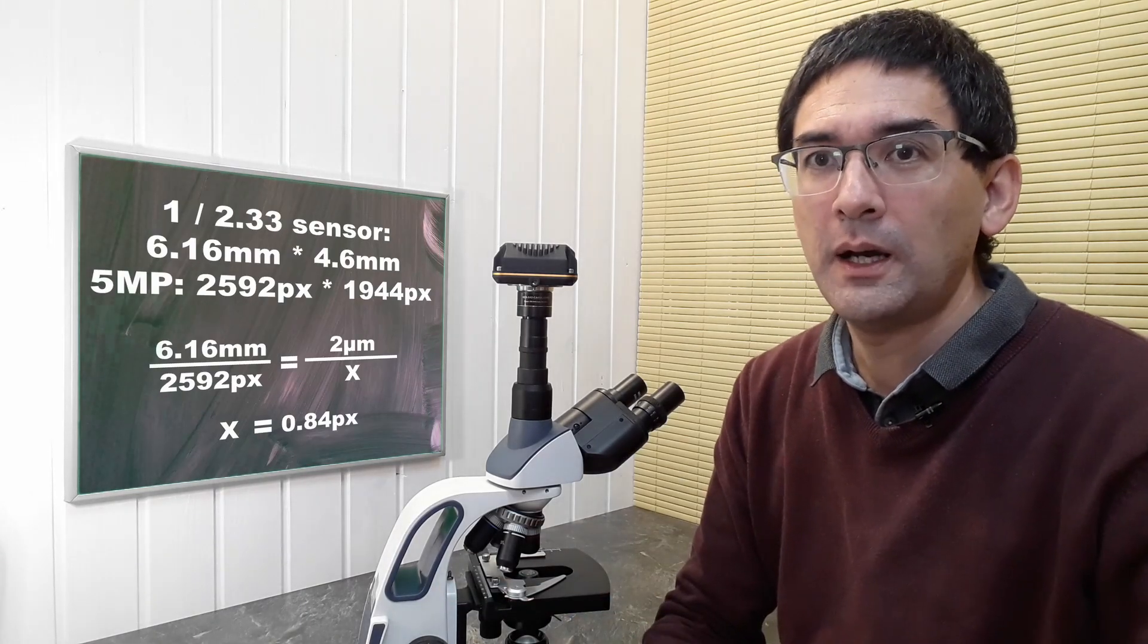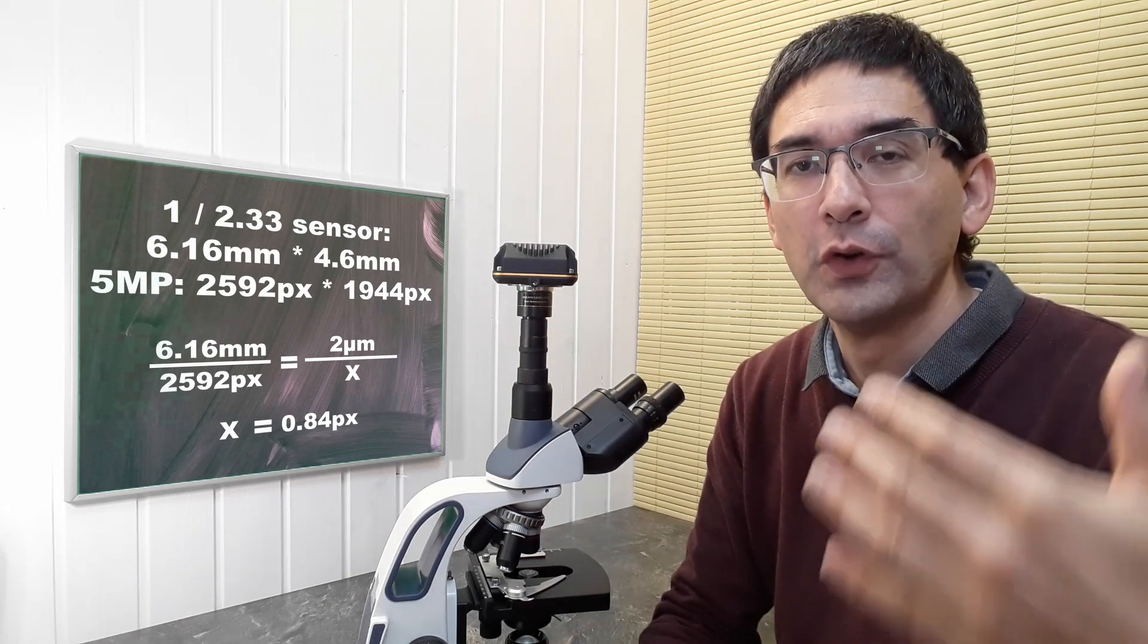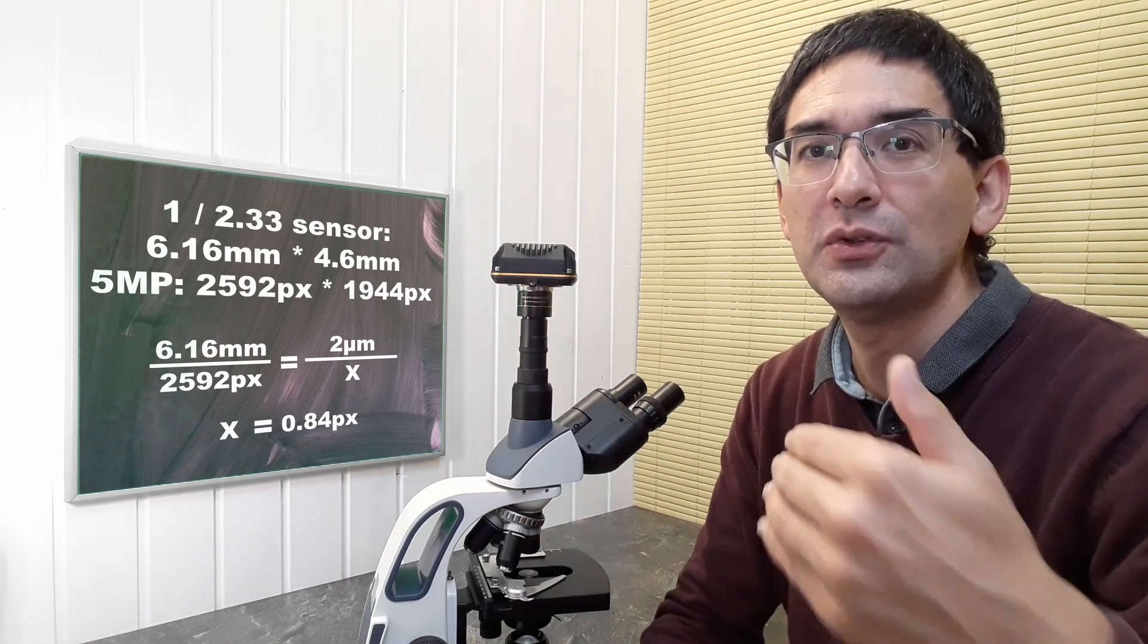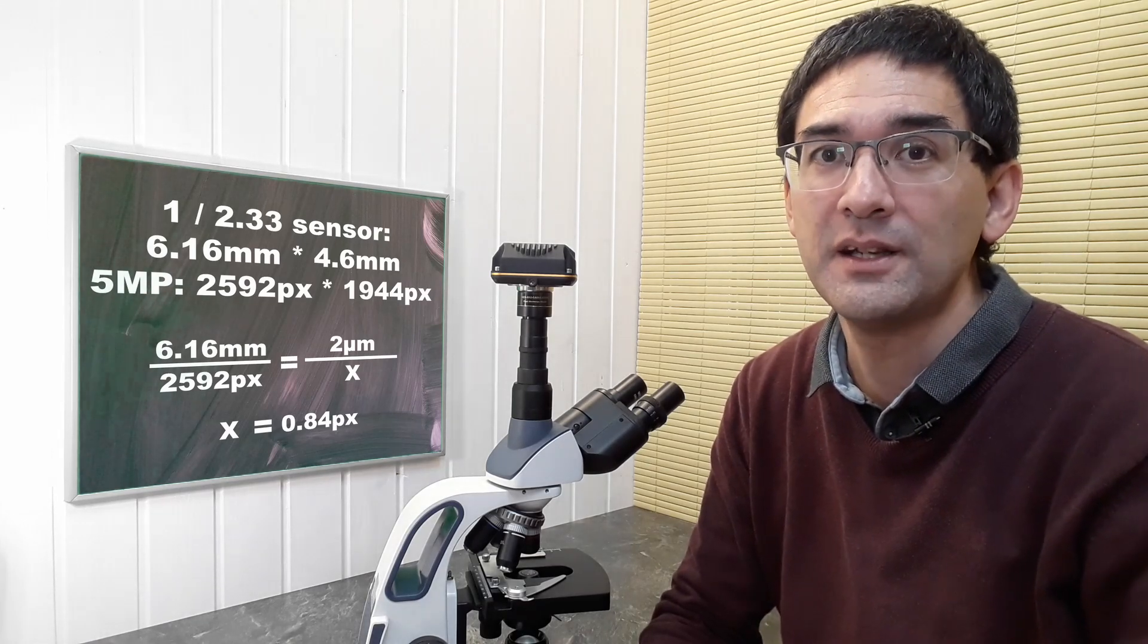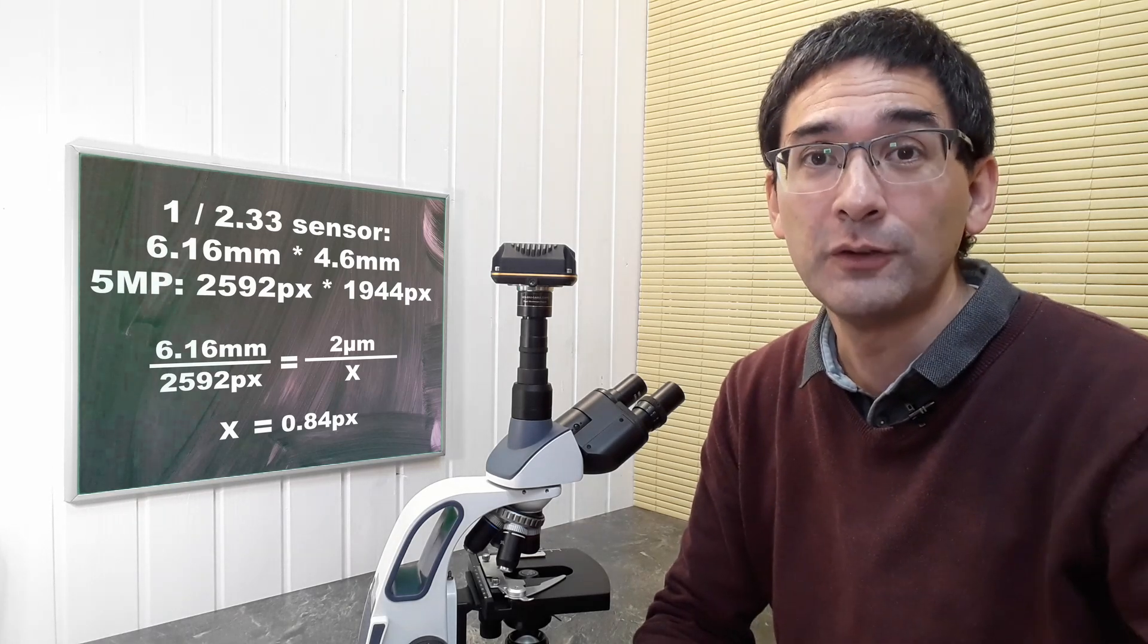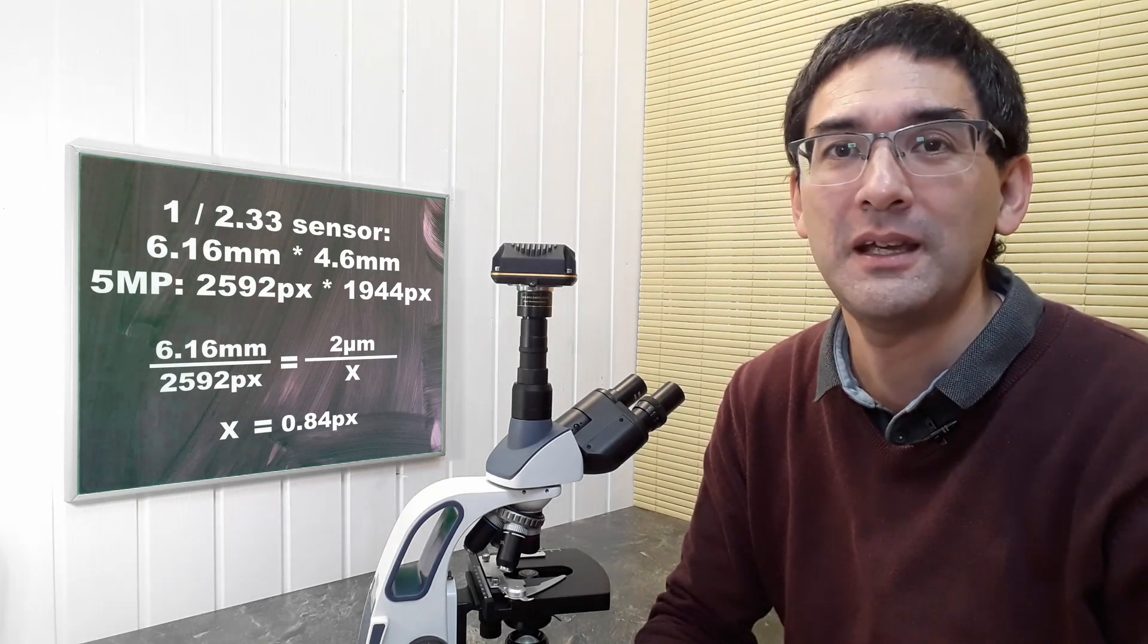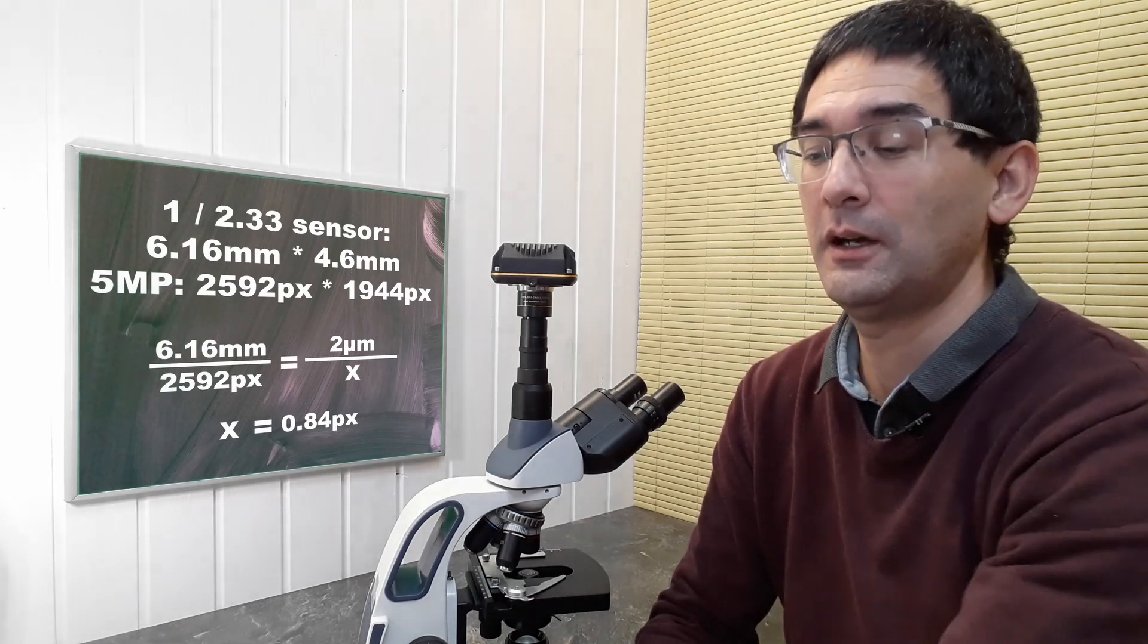Now we have to convert the size in micrometers of the image on the sensor into the number of pixels. We know it's a 1 to 2.33 inch sensor, but unfortunately this information alone is not enough. I need to know the sensor resolution as well. I'm assuming a 5 megapixel camera.